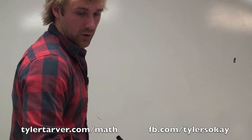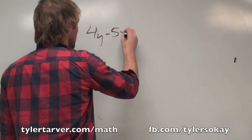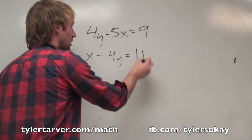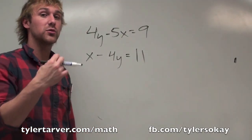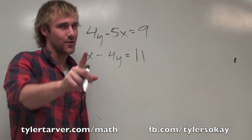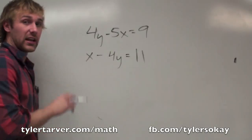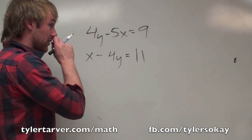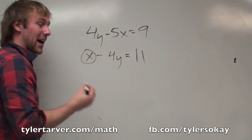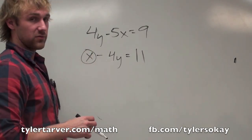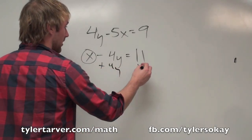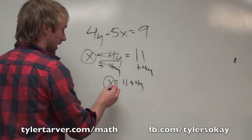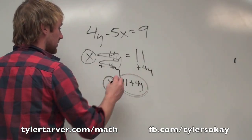Let's do one more. We've got 4y minus 5x equals 9 and x minus 4y equals 11. This one is a little more complicated — you're going to have to do substitution again, but you're also going to have to distribute afterwards. I've got to get any of the x's or y's by themselves. I think that lone x is easiest. I need to get rid of that minus 4y, so I add 4y to both sides. That gives me x equals 11 plus 4y.